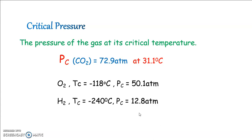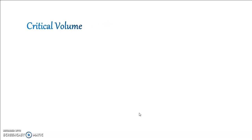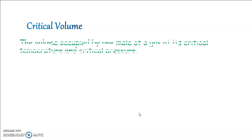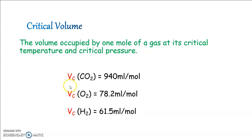Next, there is one more critical constant which is the critical volume. It is the volume occupied by 1 mol of the gas at its critical temperature and critical pressure. It is represented as Vc and we have some values for Vc. For carbon dioxide is 94 ml per mole, oxygen is 78.2 and hydrogen is 61.5 at its critical temperature and critical pressure. These are important critical constants for gases.